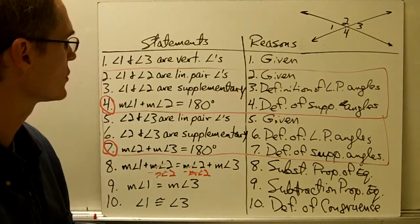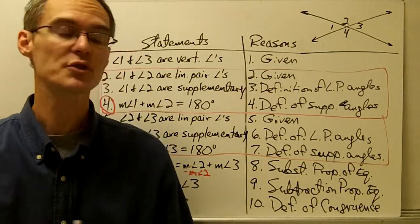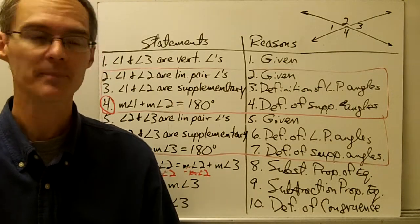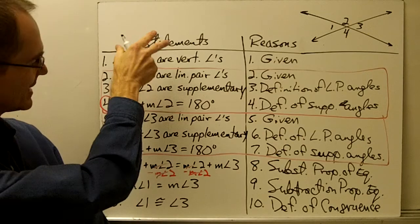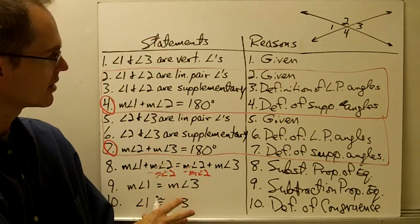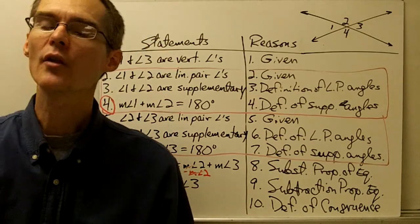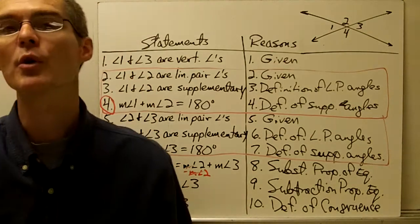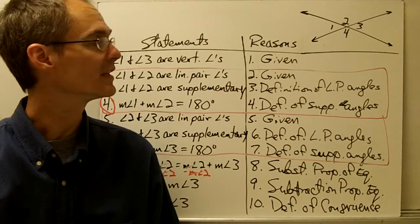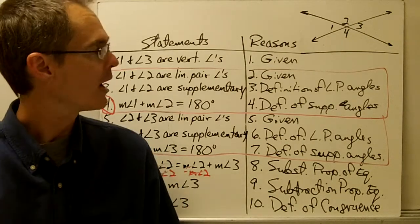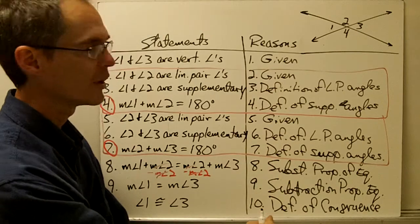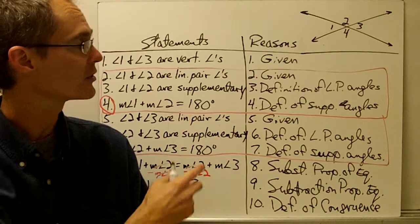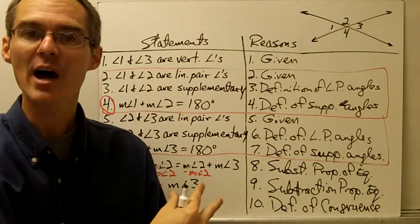In your notes, on the back, you also have this exact same proof in flow proof format. All of the same statements from the two-column proof — statements 1 through 10 — are given in the flow proof as well. What I want you to do is fill in the reasons for each one of those statements, and we will talk tomorrow about the flow proof and why it's laid out the way it is.